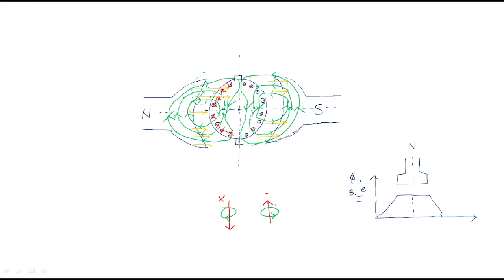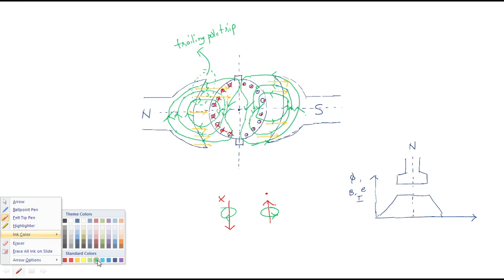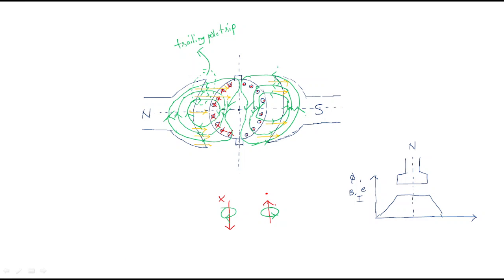Where both fluxes are in the same direction, that region is called the trailing pole tip. Where the armature flux is in the reverse direction relative to the main flux, that region is called the leading pole tip. This applies on both poles.